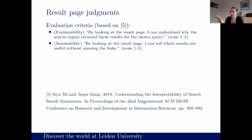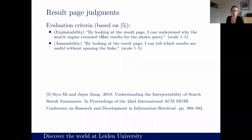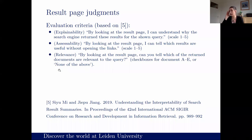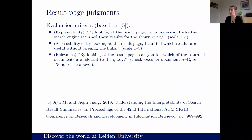For user judgments, we adopted criteria from prior work assessing snippet interpretability. We asked: by looking at the result page, can I understand why the search returned these results — that's explainability. And: can I tell which results are useful without opening the links — that's accessibility. As a third item, we measured relevance: can you tell which returned documents are relevant to the query? Users had to select documents labeled A, B, C — they could not click through.